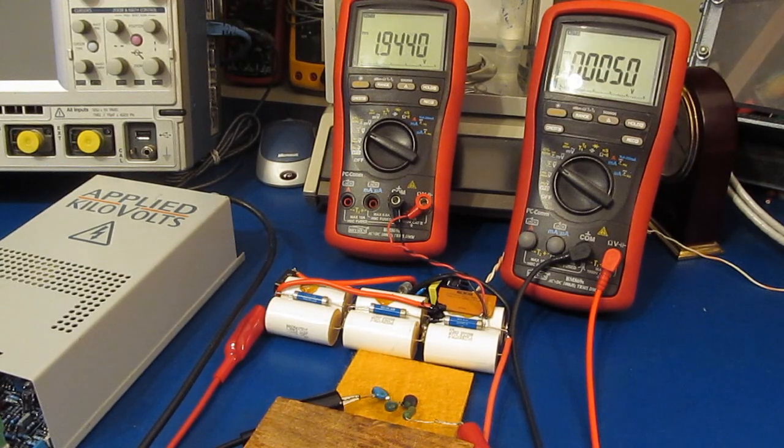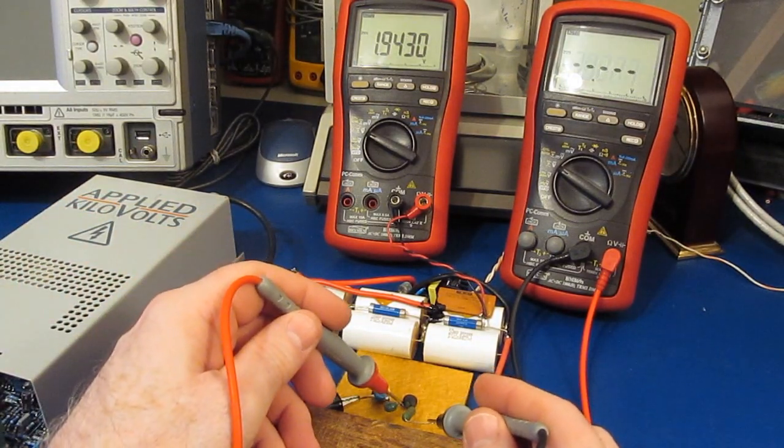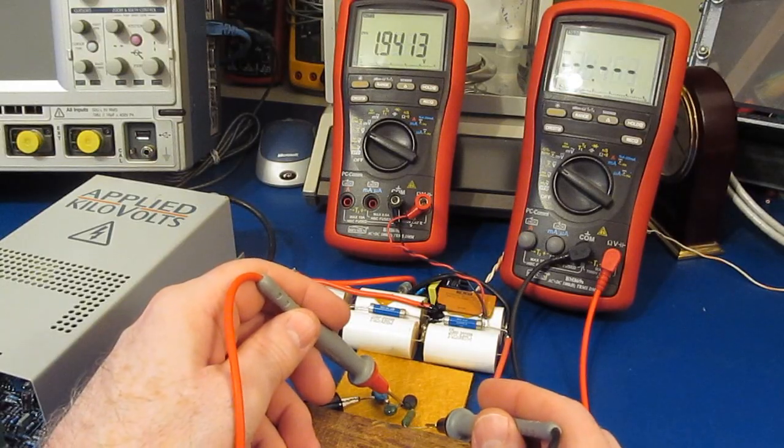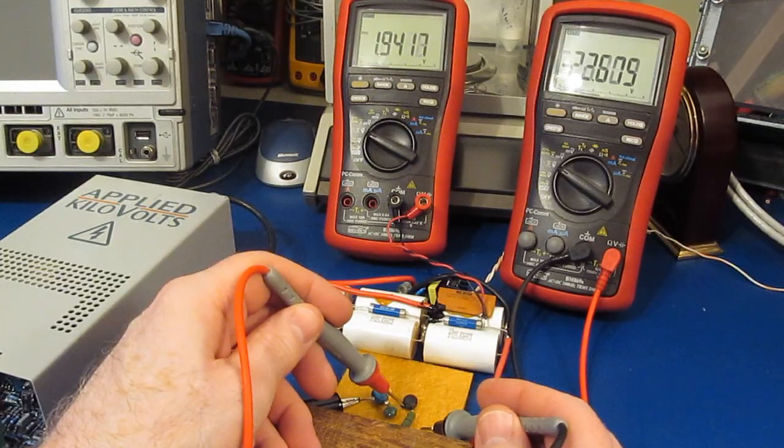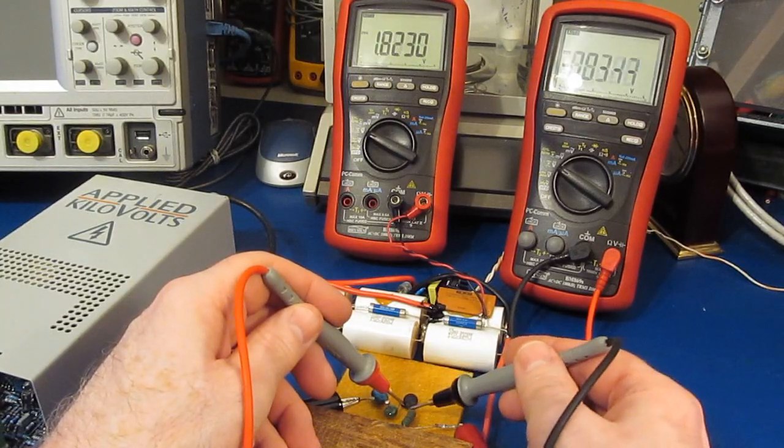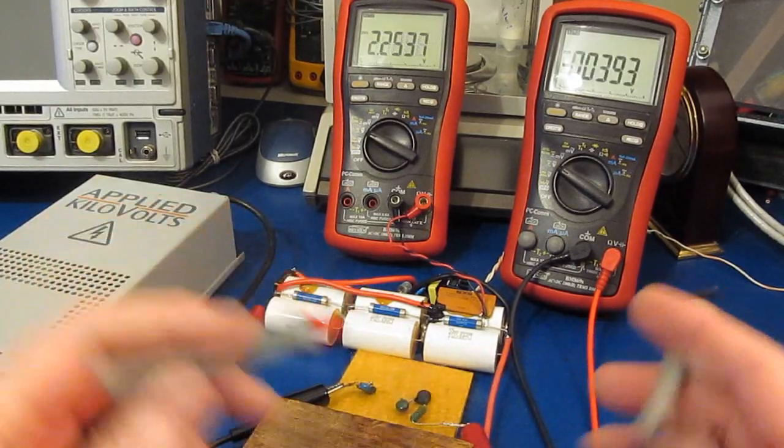So now we're putting out roughly 2,000 volts. I would expect the drop across this to be a little higher now. Let's just see. We're putting out about 20 volts or so. Let's check across the PTC. See it's about 33.